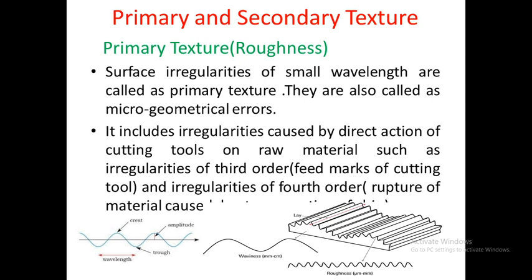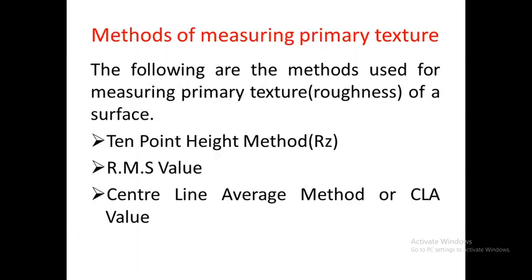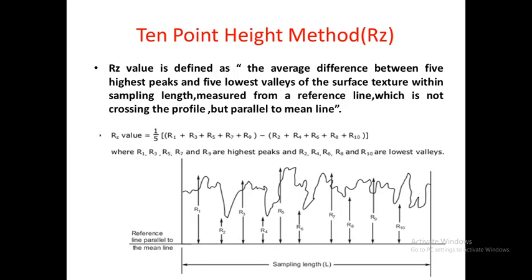Primary texture, also known as surface roughness, refers to irregularities of smaller wavelength, whereas secondary texture refers to irregularities of larger wavelength. We then saw the different methods of measuring primary texture: the 10-point height method, which gives the value Rz; the RMS value of surface roughness; and the third was the centerline average value. We also saw how to determine the 10-point height method.